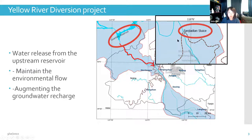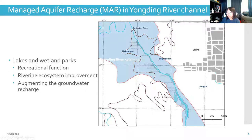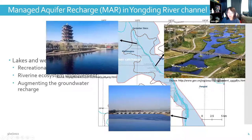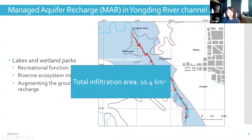The discharge is controlled by a sluice, which regulates the water release rate and duration to the downstream MAR site, which is the main research area of this study. This MAR site in the urban area along the Yongding River channel has been constructed into several lakes and wetland parks, which function as recreation spaces for citizens and have also largely improved the riverside ecosystem.